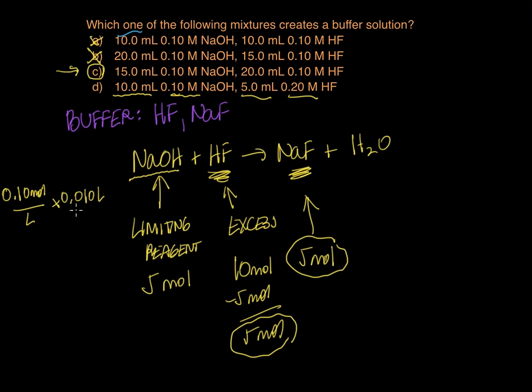So 0.010 liters is the volume here, and multiply these two quantities and the liters cancel of course, and we're left with 0.001 moles of NaOH.